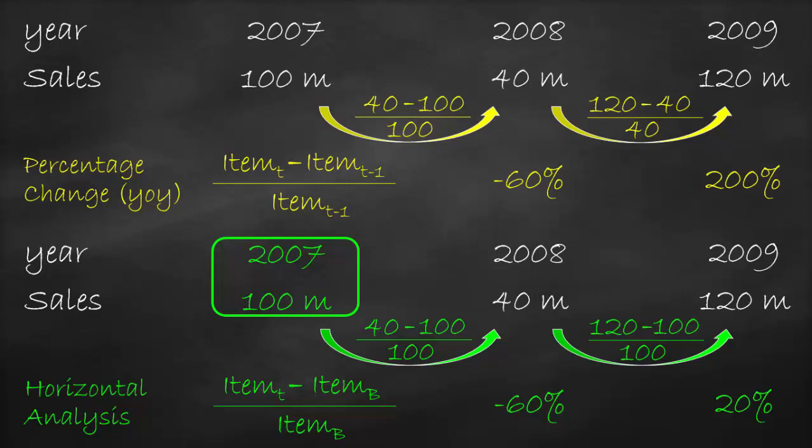This means that the horizontal analysis is more accurate when we have a recession or a boom compared to a percentage change from year to year.